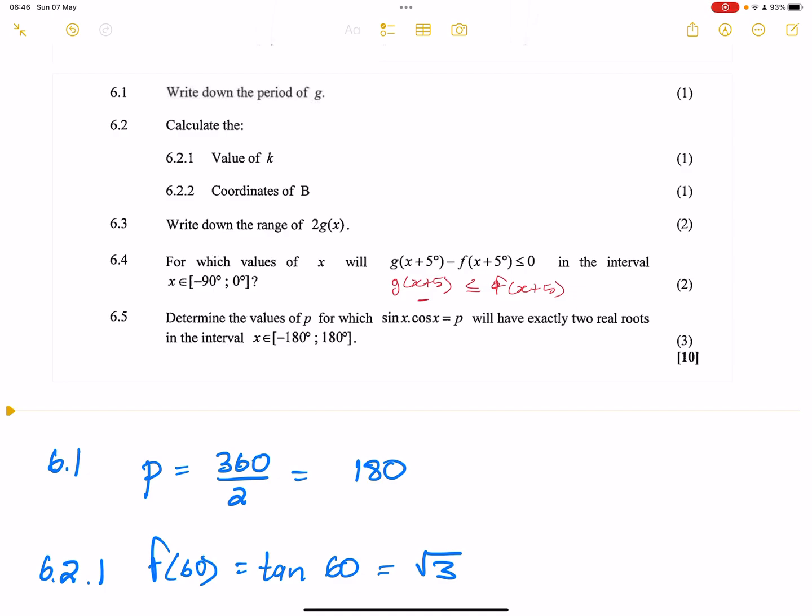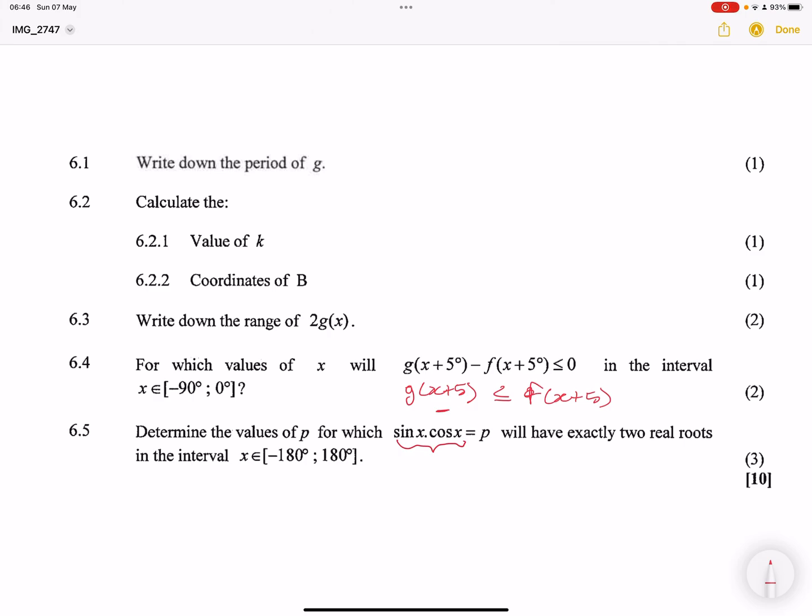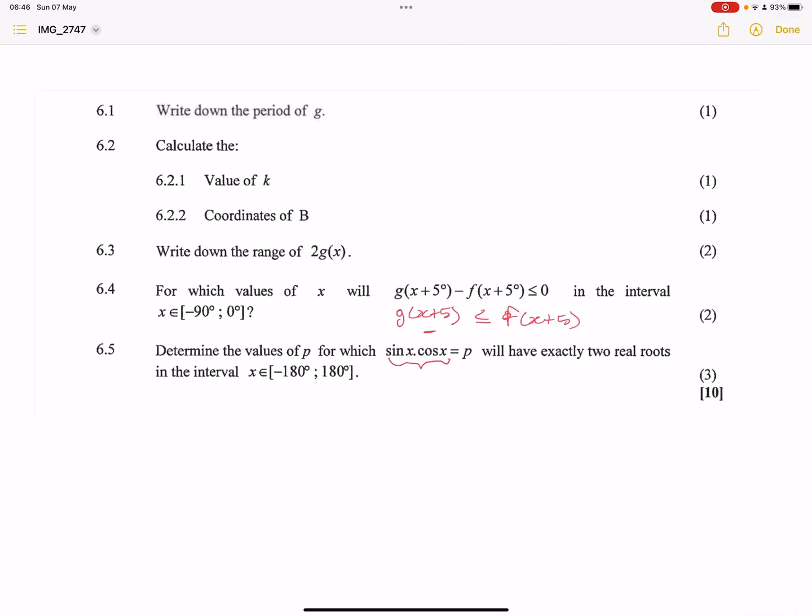6.5, they said to us, determine the values of p for which sine of x, cos of x is equal to p, which have exactly two real roots in the interval minus 180 to 180. Now I want you to please note in this case, what does this look like in our graph? Of course, they're not going to just ask us a random question, it has to be related to the graphs that we have. Now you'll agree with me, this looks like the graph of g, isn't it?